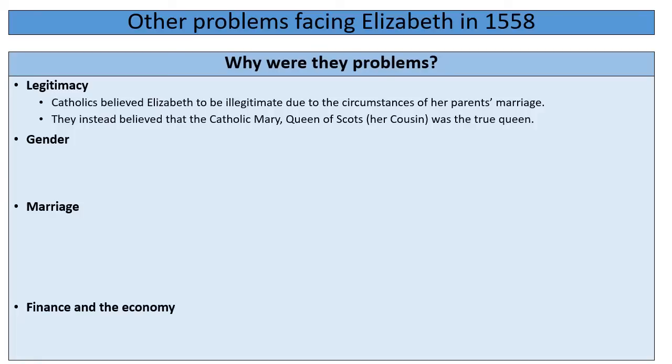This is a problem because Catholics believed someone else was the real monarch of England — in Elizabeth's case, they believed Mary Queen of Scots, Elizabeth's cousin, was the true Queen of England as well. This was going to cause problems throughout her reign. Immediately at the start of her reign it was also a problem because around half the country was Catholic, especially in the north and west away from her power base — so potentially half the country believed she shouldn't be Queen in the first place.